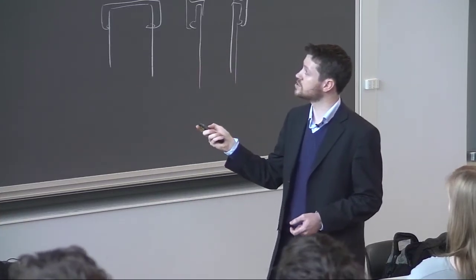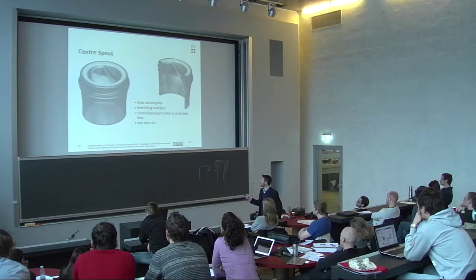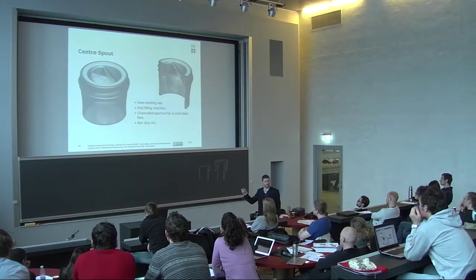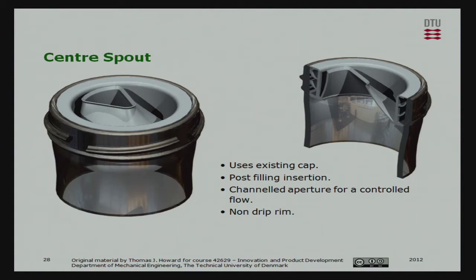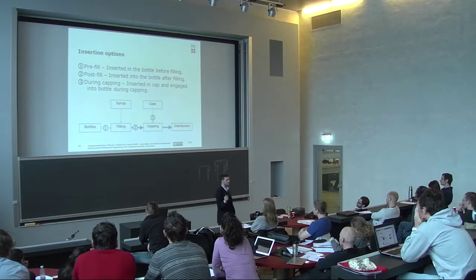Here was one of the first concepts we came up with. Here's the glass bottle inside, here's a plastic insert which is press-fit into the bottle with a non-drip lip, and then you have a channeled aperture with the metal cap fitting over the top. Here's one with a similar design but with a central spout and vents in the side to allow product that drips out to be vented back into the bottle. Then we did some more research into the production facilities and realized there were several areas where we could make an impact.